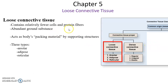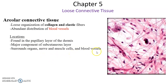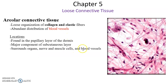Loose connective tissue has very few cells, very few protein fibers, and lots of ground substance, so they often make good packaging material supporting other structures. Three types: areolar, adipose, and reticular. Areolar connective tissue has collagen and elastic fibers scattered about, lots of blood vessels, and lots of scattered cells. The dark spots represent the nuclei of fibroblasts. They're found in the papillary layer of the dermis, in the subcutaneous layer underneath the skin, and they surround many organs, nerves, muscle cells, and blood vessels — very important packaging material.